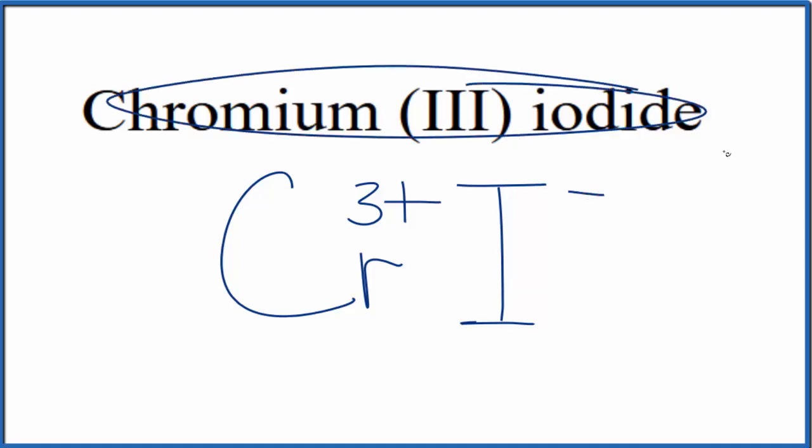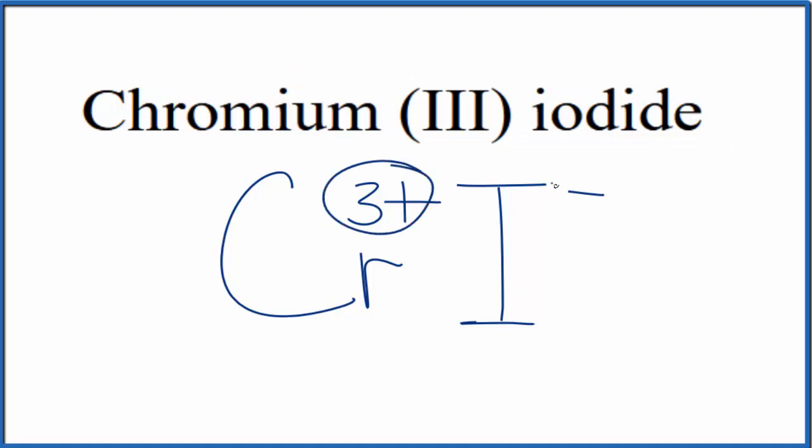And since chromium (III) iodide is neutral—it doesn't say ion after it—these charges, 3+ and 1-, need to add up to 0.